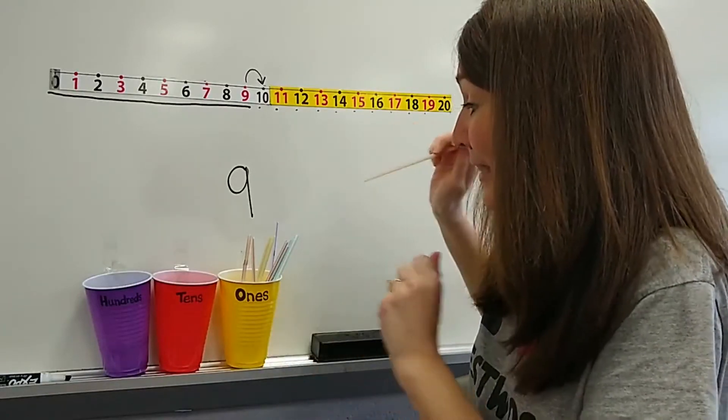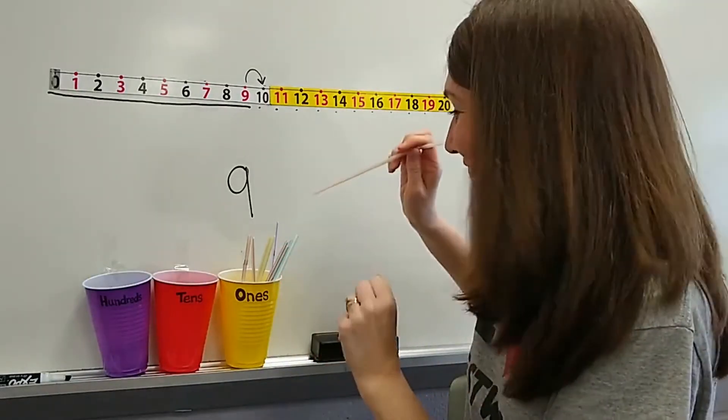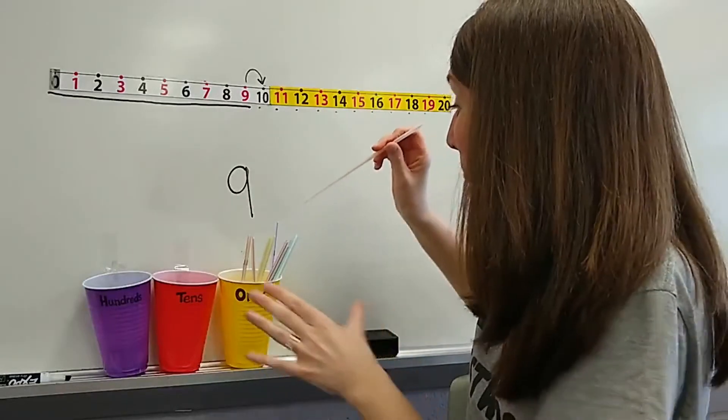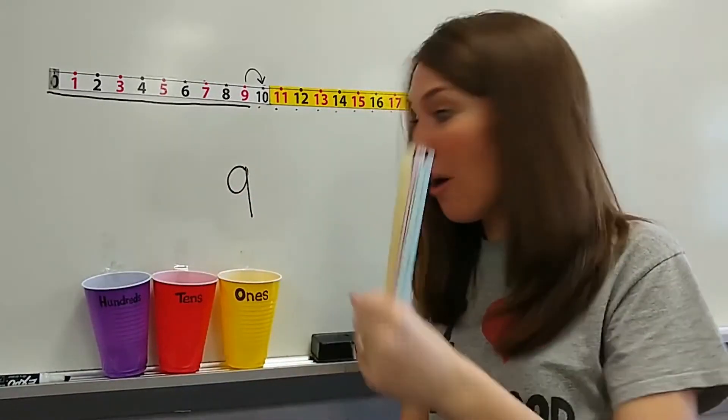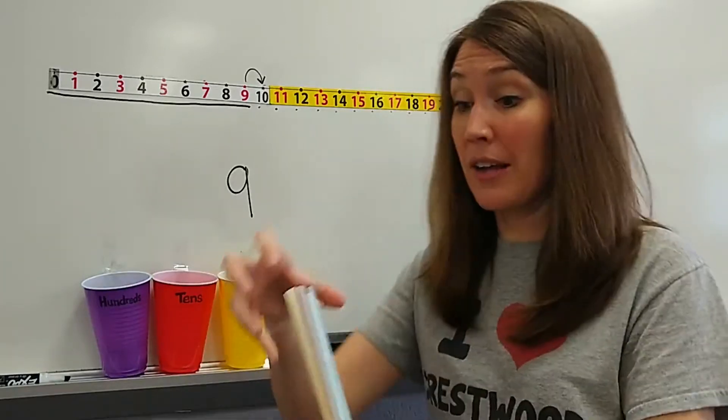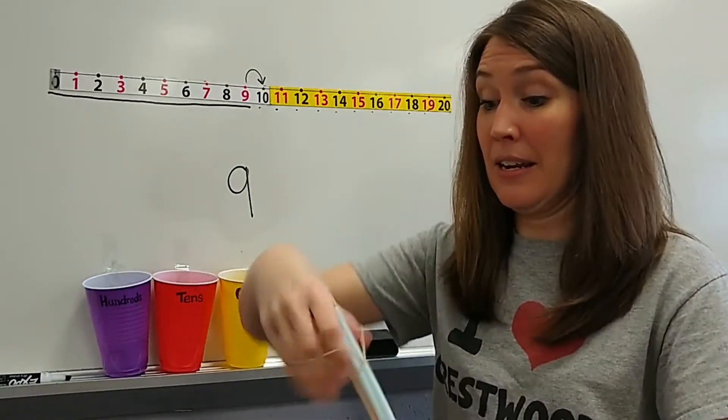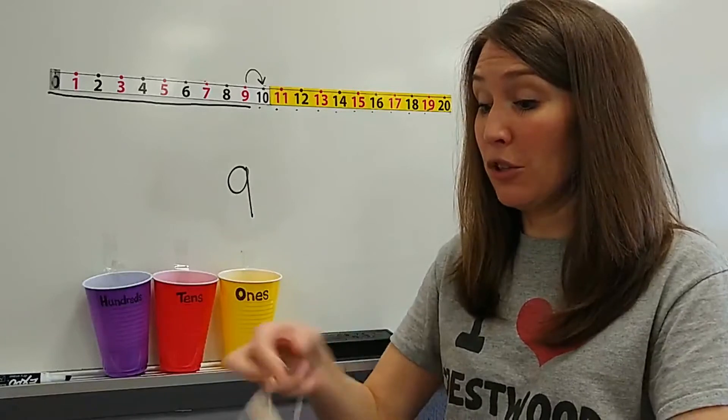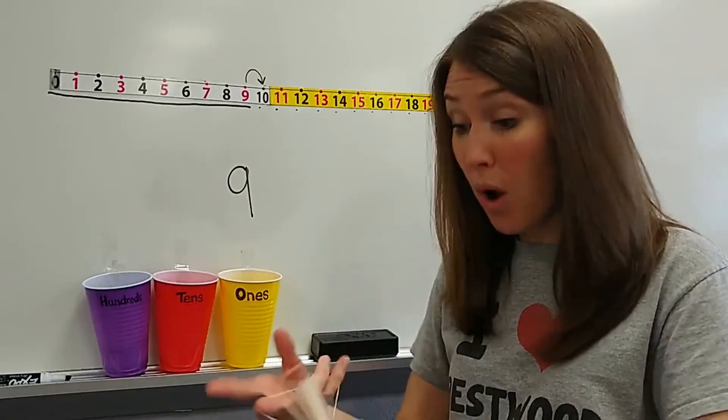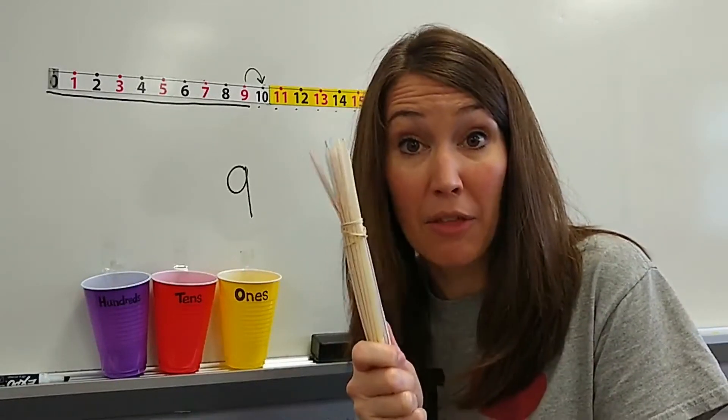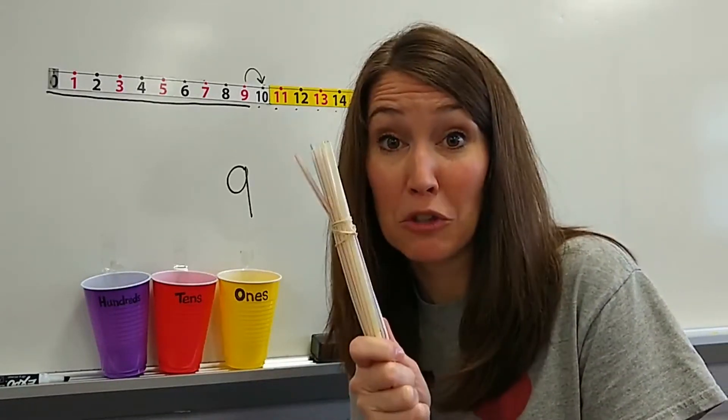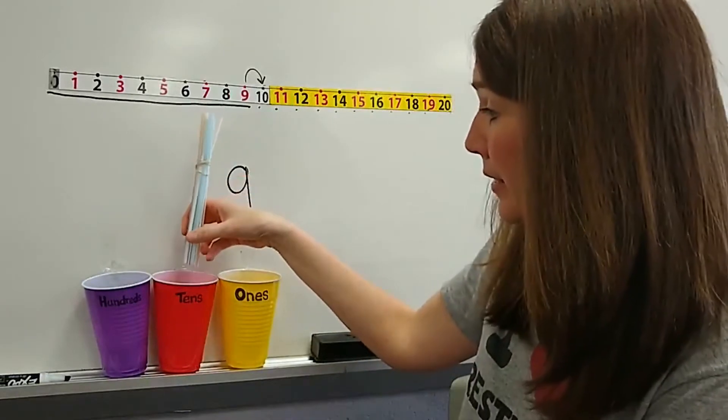Are you ready? I get so nervous, like excited nervous. Oh my goodness, that was a close one. Okay, so now I have 10 straws. This is not 10 individual straws anymore. This is a one group of 10. I make them into a unit. I rubber band them together because this group of 10 is special. It moves over to the tens cup.